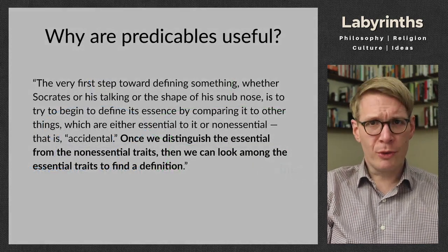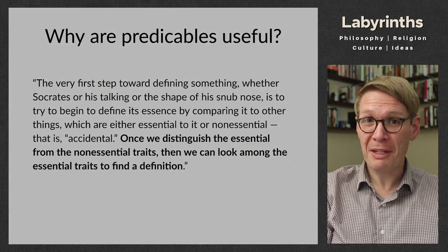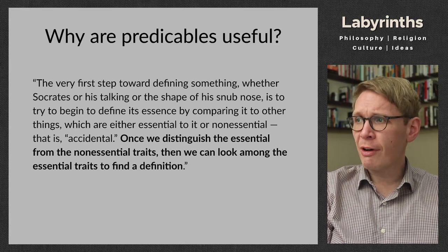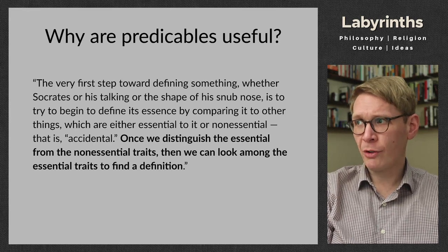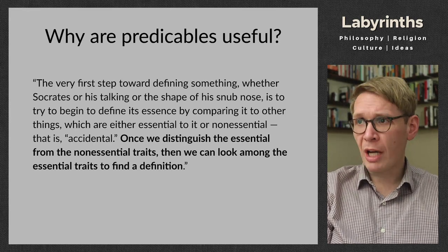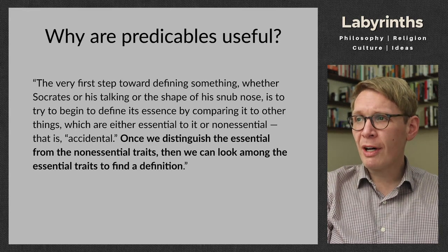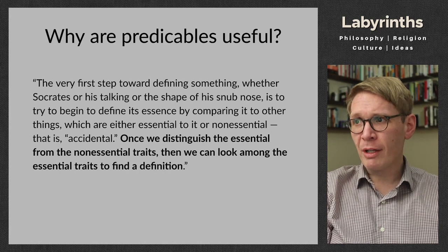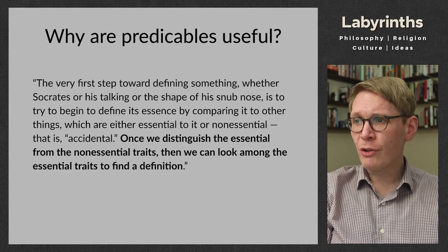So why is it useful to think about these five predicables? Why do we need categories at all? We have here from Hauser in his book Logic as a Liberal Art the following helpful passage: the very first step toward defining something — whether Socrates, or his talking, or the shape of his stump nose, whatever it may be — is to try to begin to define its essence by comparing it to other things which are either essential to it or non-essential, that is accidental. Once we distinguish the essential from the non-essential traits, then we can look among the essential traits to find a definition.